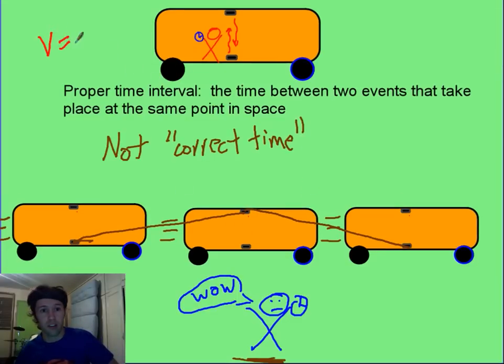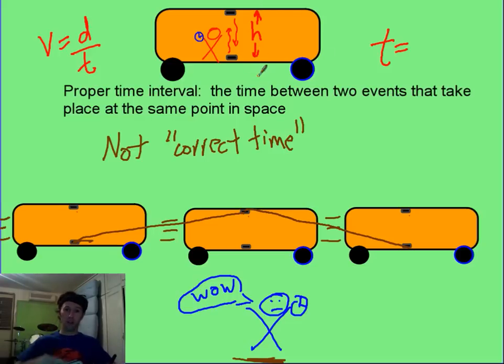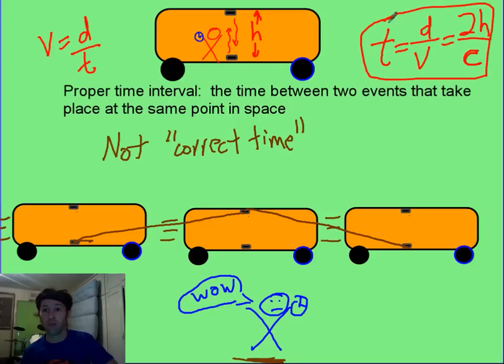We know that velocity has to be distance over time. We want to know the time that red man gets. Let's say that this has a height of h. That light's going to go up, boing, and bounce off. The distance of time, if we can remember that time is equal to distance over velocity, the distance is going to be 2h. The velocity that he has to see it goes at, because Einstein says so, is c. So his time is going to be 2h over c.